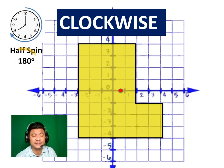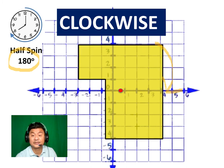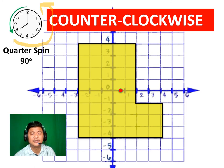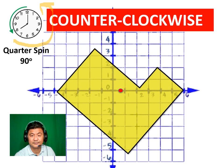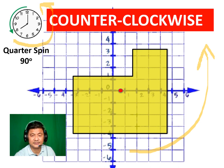Now we will do a half spin — clockwise once again. That's 180 degrees. Now, let's do counterclockwise. Counterclockwise is the other way, and we're going to do a 90-degree quarter spin. See that? It went that way.